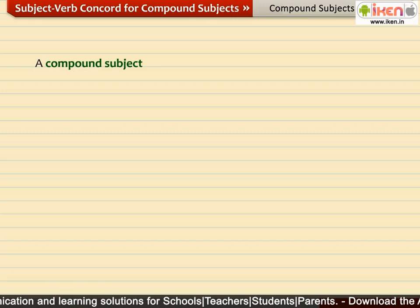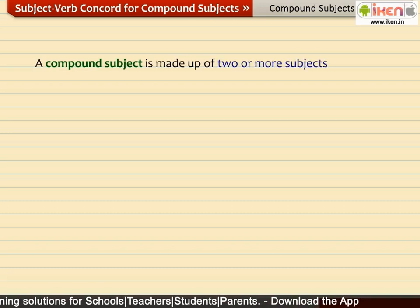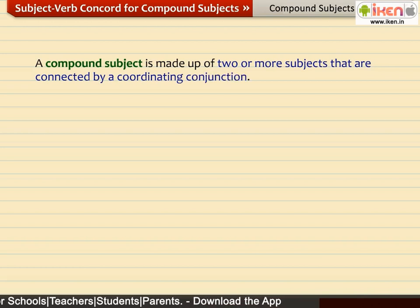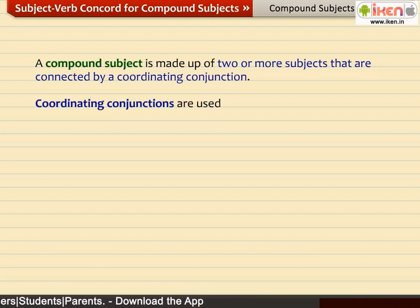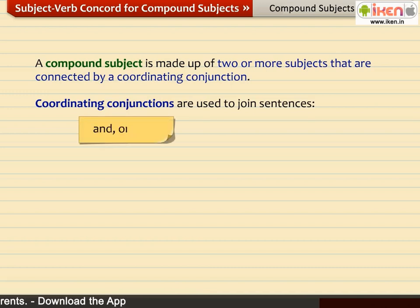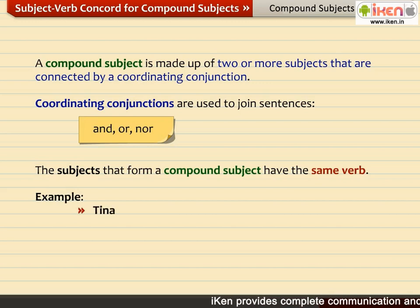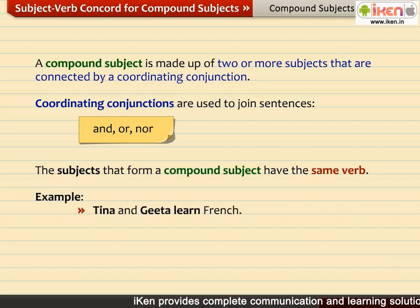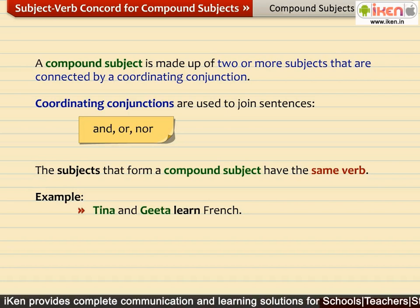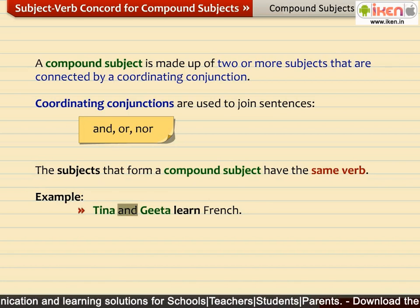A compound subject is made up of two or more subjects that are connected by a coordinating conjunction. Coordinating conjunctions are used to join sentences; 'and,' 'or,' and 'nor' are examples of coordinating conjunctions. We must remember that the subjects forming a compound subject take the same verb. For example: 'Tina and Gita learn French.' Tina and Gita form a compound subject, connected by the coordinating conjunction AND, and both take the same plural verb LEARN.